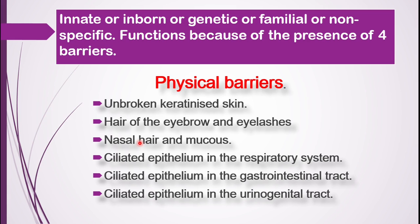The third physical barrier is the presence of nasal hair as well as mucus found in the nasal tract. When we inhale air, there are possibilities of microbes entering our respiratory system, but the hair and mucus in the nasal tract trap a number of microbes and prevent them from entering the respiratory system.